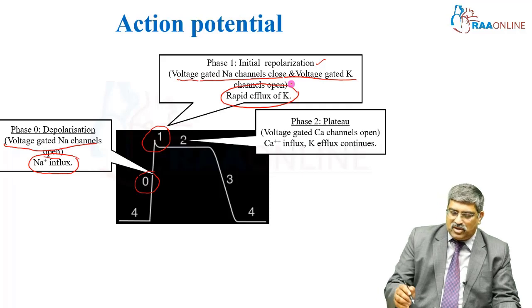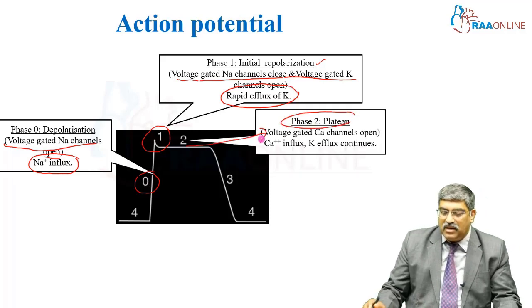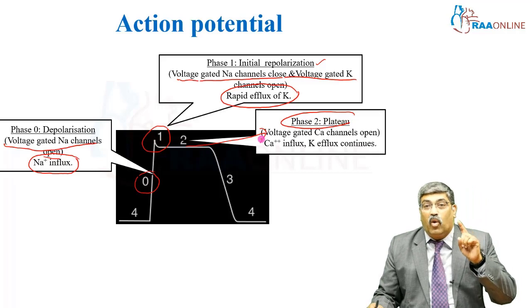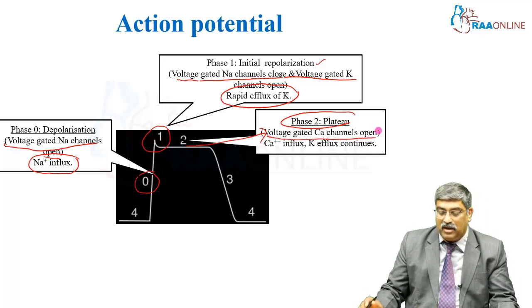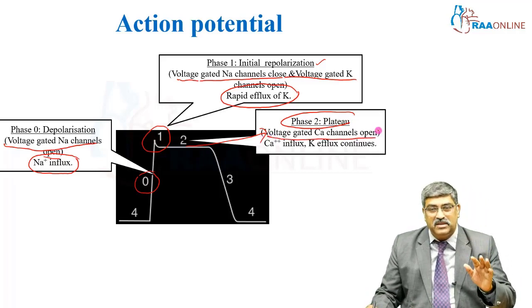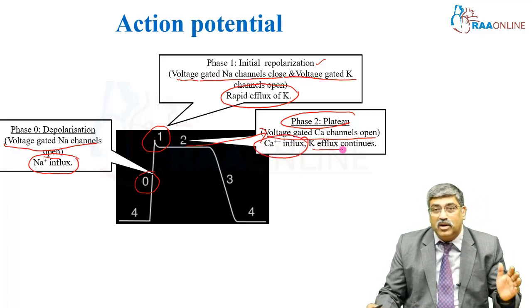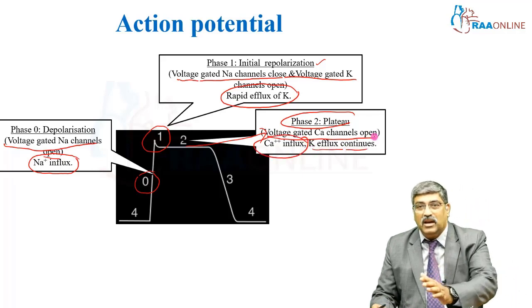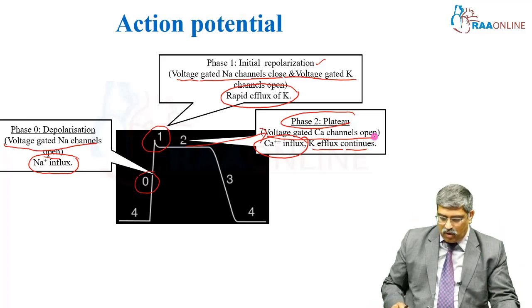Phase 2 is the plateau phase. Here, the voltage-gated calcium channel opens, calcium comes in, and potassium outward flow is still continuous because the potassium channel is still open.